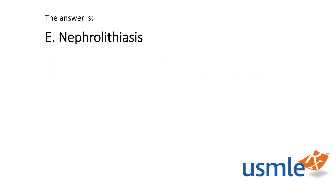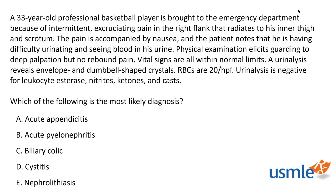Great job — most folks got the right answer, which is E, nephrolithiasis. Our 33-year-old basketball player presents with intermittent flank pain radiating to his inner thigh and scrotum, associated with nausea, hematuria, guarding but no rebound tenderness, and normal vital signs. The urinalysis shows hematuria and crystals but is otherwise negative, with no signs of infection. This fits nephrolithiasis: that colicky, intermittent waxing-and-waning pain radiating to the scrotum and groin is classic, and unilateral flank pain radiating downward is typical.